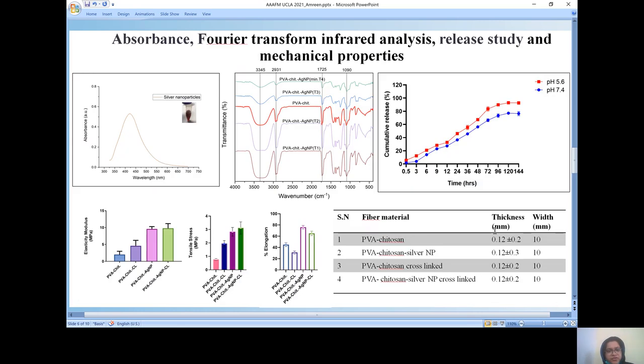The absorbance of silver nanoparticles showed that the lambda max was around 420 nanometers. FTIR was carried out on the fibrous sheet which we obtained, wherein the control was kept at PVA and chitosan, that is the plane without Ag nanoparticles, and the rest of the four peaks showing that the spectra are showing those with the AgNP.